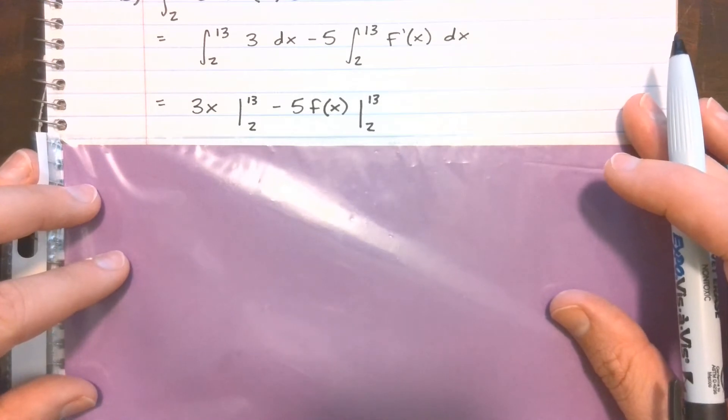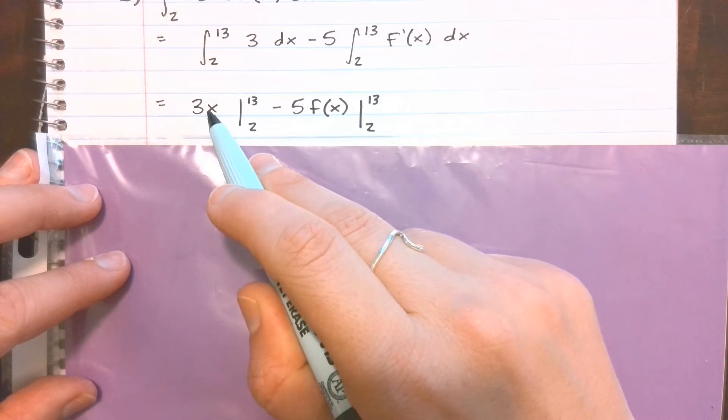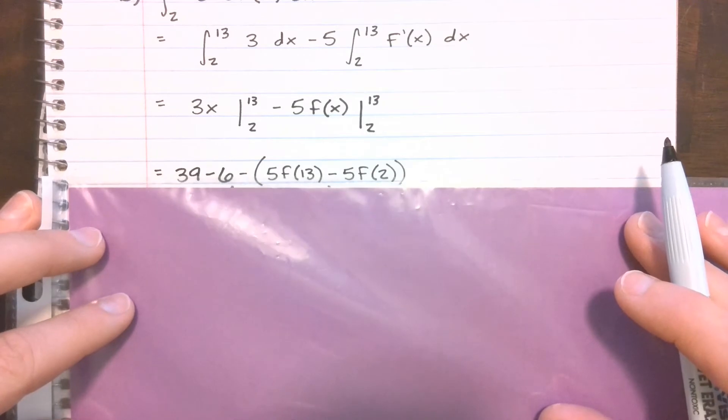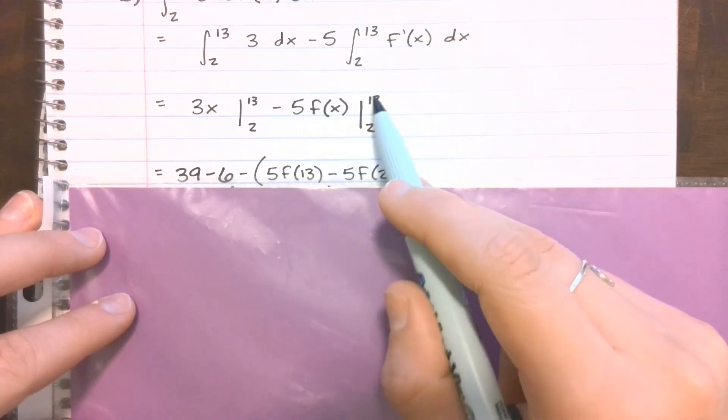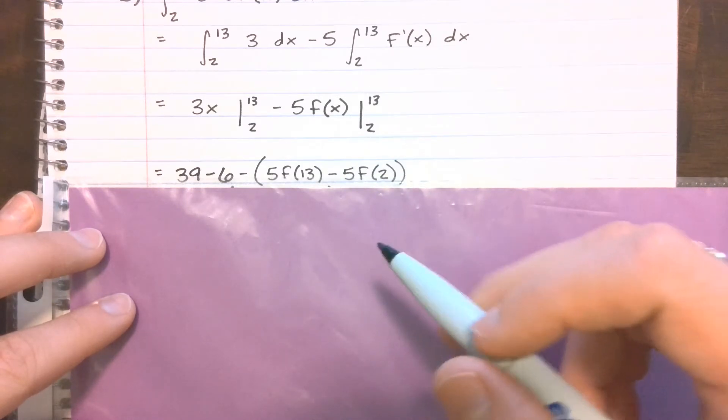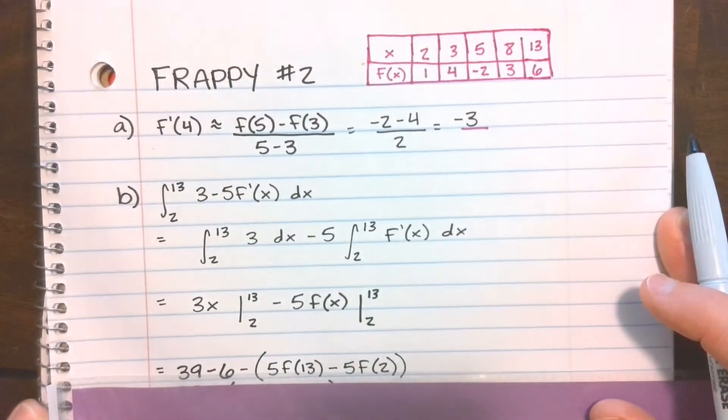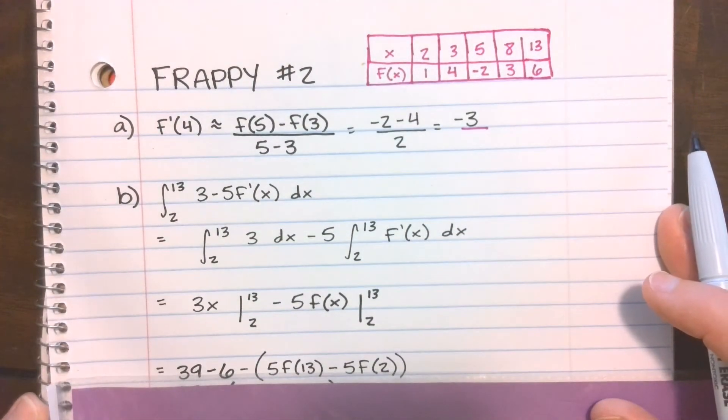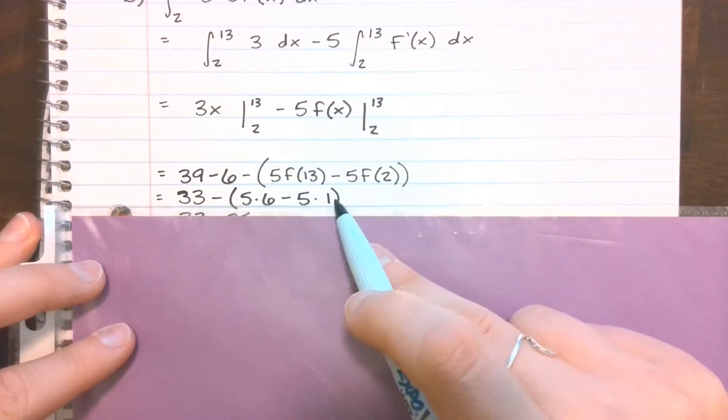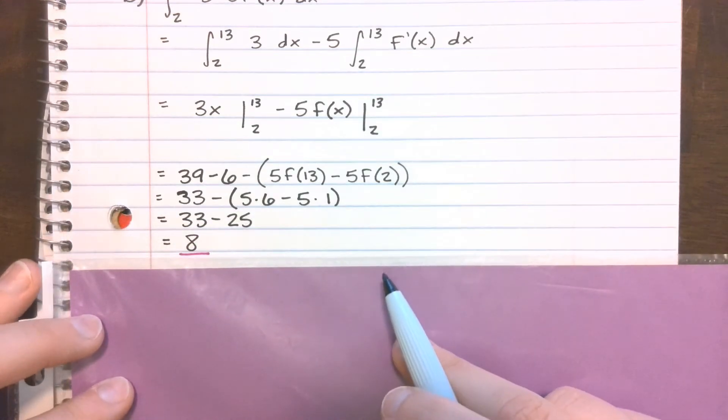So that brings me to the definite integral part of this. Remember that you're plugging in the upper bound and then subtracting, plugging in the lower bound. So I'm going to have that 39 minus 6. And then same thing over here, plugging in 13, subtracting, plugging in 2. But then I'm going to have to use my table to see that f of 13 is 6 and then f of 2 is 1. So plugging in both of those values, and then from there, we're just simplifying until we get that that integral is 8.